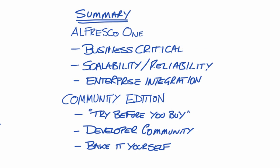As can be seen, there are some major differences between Alfresco One and the Community Edition. Alfresco One is designed as a business critical ECM platform. It provides both the scalability and reliability you need to manage your content, and it's an open solution built on modern technology that allows you to integrate Alfresco with other line of business applications.